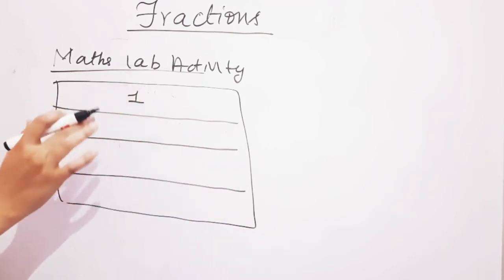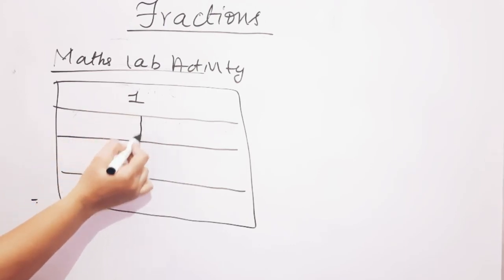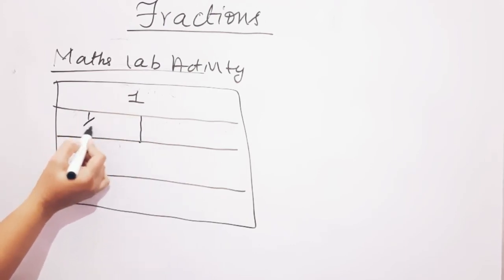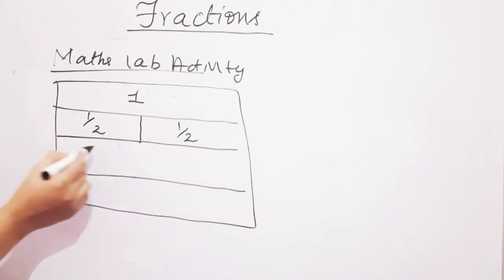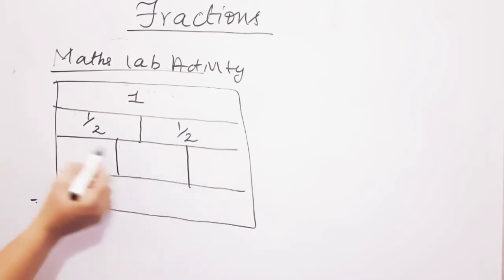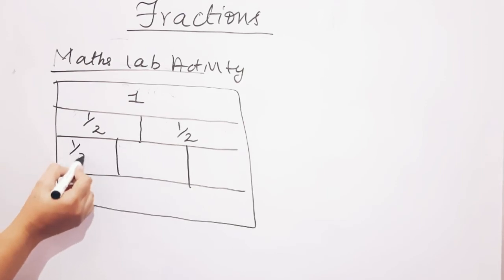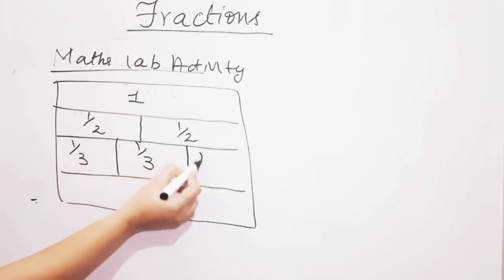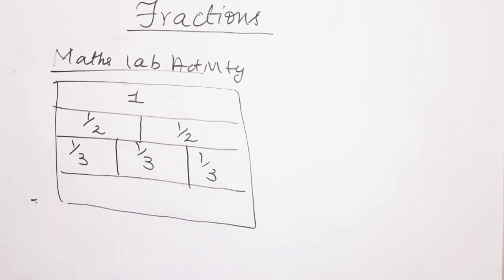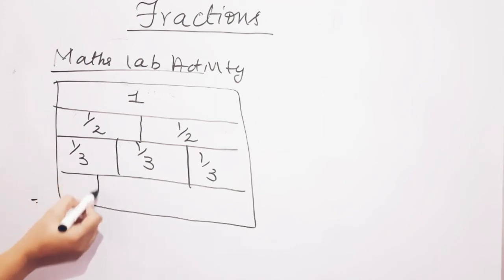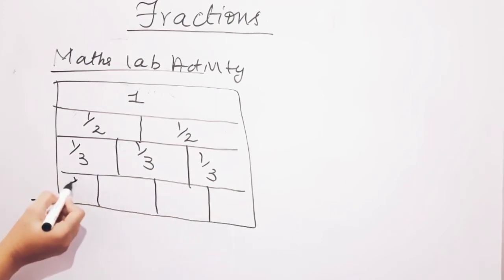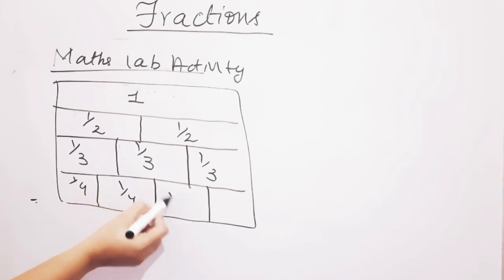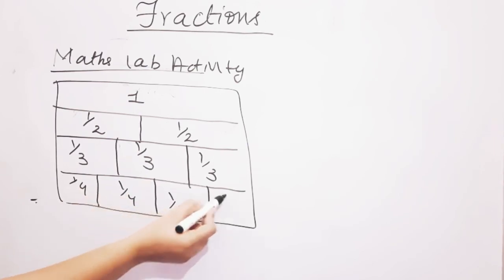You have to fold the paper four times. The first fold represents 1 whole. The second fold divides it into two parts — the fraction represented by each part is 1/2. The third fold divides it into three equal parts — each part is 1/3. The last fold is divided into four parts — each part is 1/4.